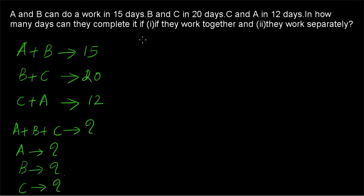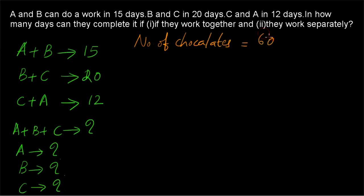Using the chocolate approach, the number of chocolates will be equal to the LCM of 15, 20 and 12. The LCM is equal to 60. So the total amount of work to be done is assumed to be 60 chocolates.